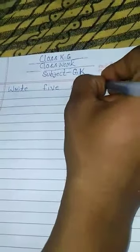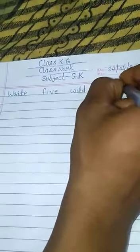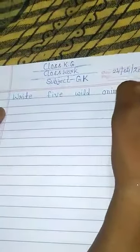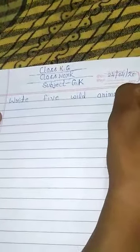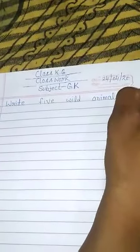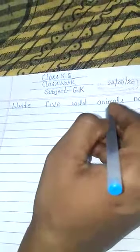A-N-I-M-A-L-S Animals, N-A-M-E Name. Write Five wild animals Name - पाँच जंगली जन्वरों के नाम लिखे।